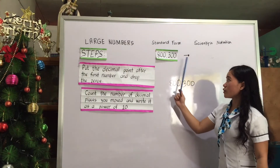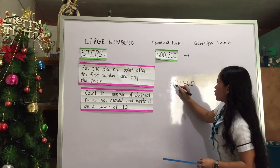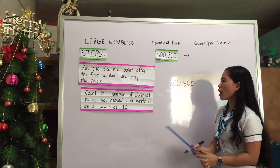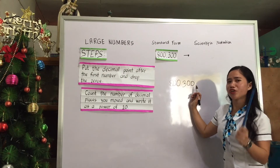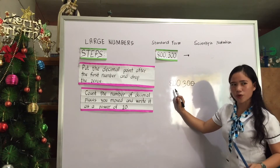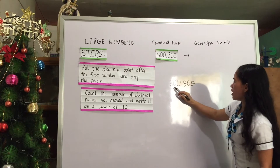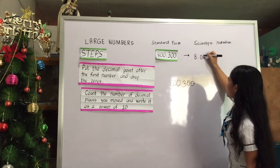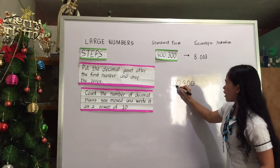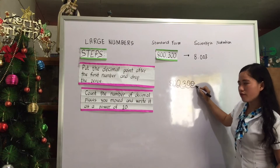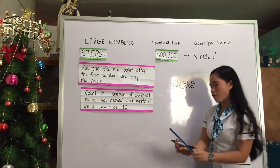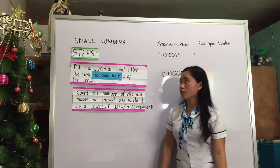Another example is 8,300,000. For step one, put the decimal point after the first number here, and drop the zeros — but remember, we only drop the zeros that come after the non-zero digits. So the remaining after step one is 8.003. For step two, count the decimal places moved: 1, 2, 3, 4, 5 — so we write times 10 to the power of 5, because we moved the decimal point 5 places.